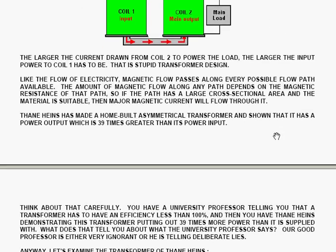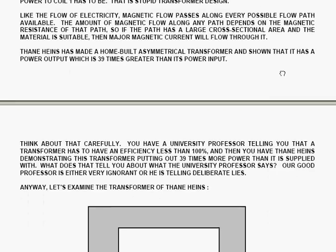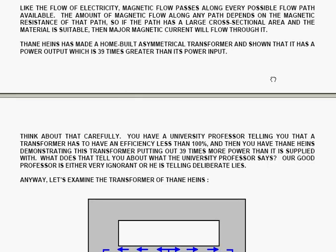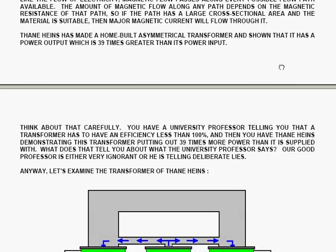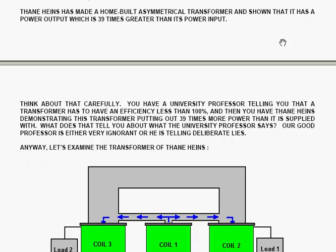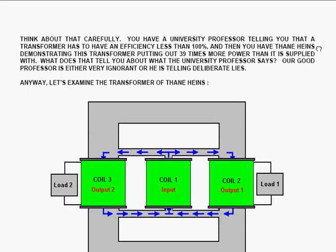Like the flow of electricity, magnetic flow passes along every possible flow path available. The amount of magnetic flow along any path depends on the magnetic resistance of that path. So if the path has a large cross-sectional area and the material is suitable, then major magnetic current will flow through it. Thane Hines has made a home-built asymmetrical transformer and shown that it has a power output which is 39 times greater than its power input.